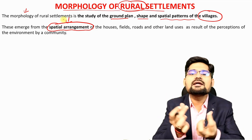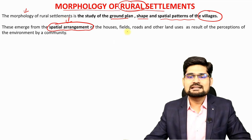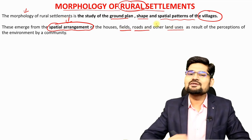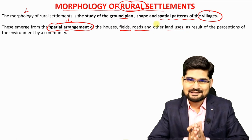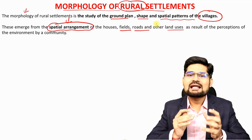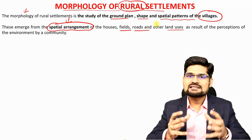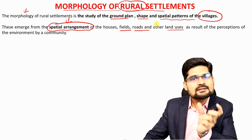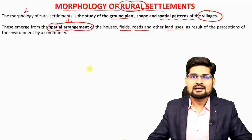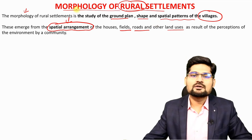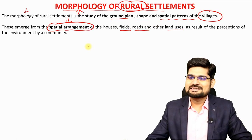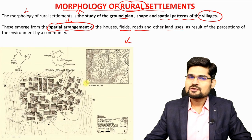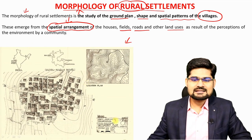The key word here is the spatial arrangement of houses, fields, roads, and other land usage that happens in rural areas. Land use and land cover refers to what is reflected on the surface of the earth and how it is spatially arranged. The study of that is what we learn in the morphology of rural settlements.